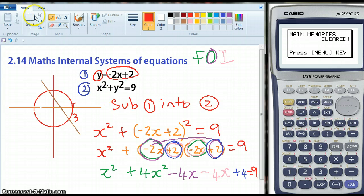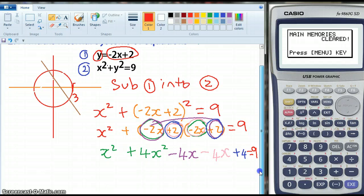Alright. So we just move down a little bit. Get a bit more room. So now we need to simplify that. So x squared plus 4x squared is 5x squared. Minus 4x minus 4x is minus 8x. And my plus 4 minus my 9 equals 0, because I've taken the 9 to the other side. So that's going to be minus 5.